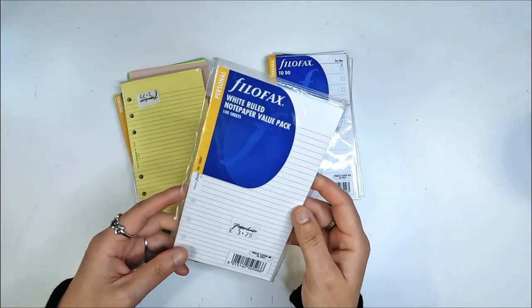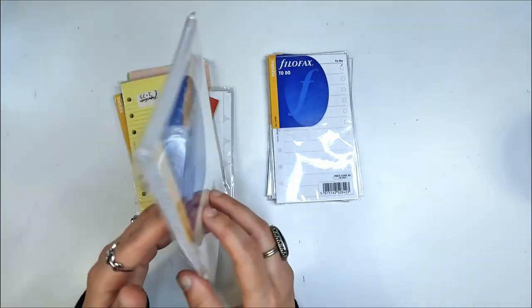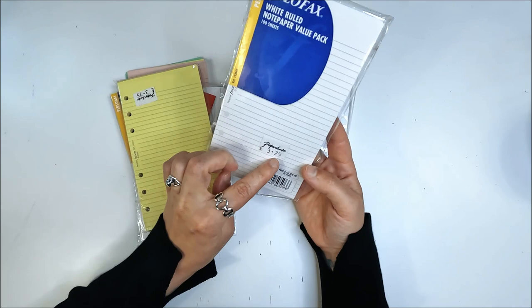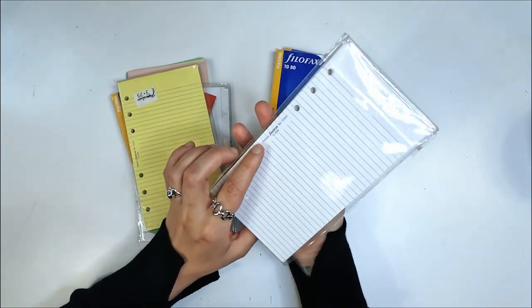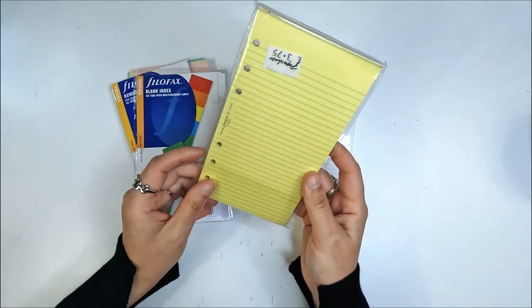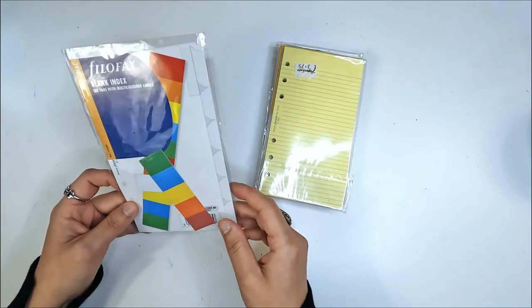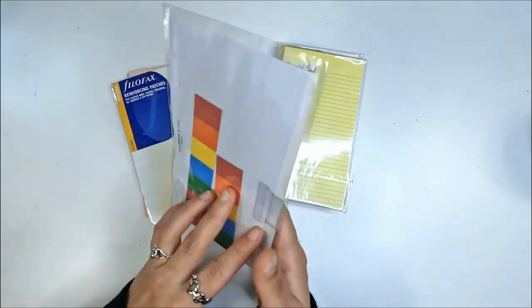Then we have this Filofax white ruled notepaper, 100 sheets. Probably will use these for my running to-do lists. Oh, and this has the price on there as well. It says 3.75 from Paperchase and they were dated 2008. This is some of the yellow lined paper from Filofax. Again, the price in there, 3.75.